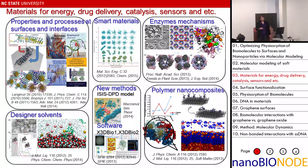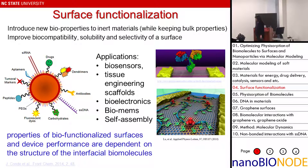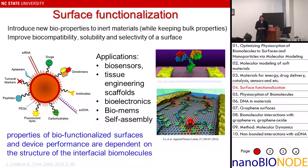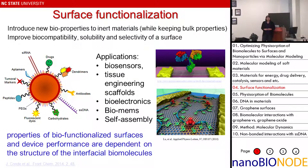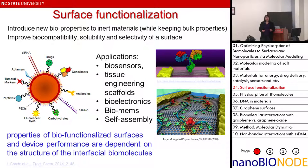We start from the flat surface and then move on to examples with nanoparticles. So why do we care about biosurface functionalization? The beauty of this is that you can keep the bulk properties of the inert materials, which could be organic or inorganic, and then you add more interesting properties such as biocompatibility and solubility.